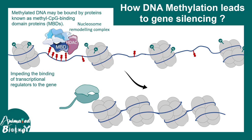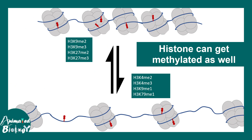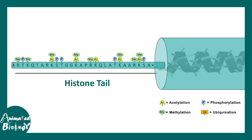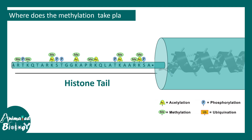DNA is not the only thing which is methylated — histones can also get methylated. In the second part of this video we'll talk about histone methylation. The second site where methylation can occur is the histones, and looking at the N-terminal tail of the histone, there are several residues which can get methylated.